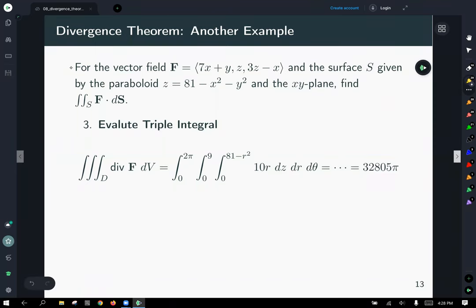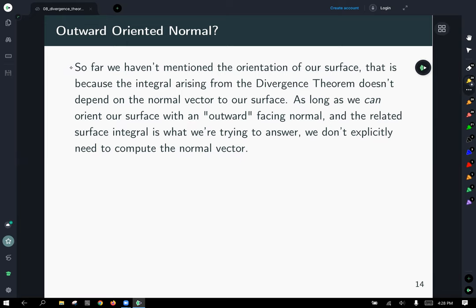I lied. That doesn't actually conclude it. There's one more comment I have to make. So why haven't we mentioned the orientation of the surface in this case? Well again, I've said it a couple times that we don't actually have to set up the surface integral, we can just apply the divergence theorem and do the oftentimes easier triple integral, and as such, orientation of the surface doesn't come up. So as long as it's possible to orient our surface with an outward-facing normal, in other words, as long as it's possible to do a surface integral of this particular field, then we don't need to explicitly compute the normal vector or worry about that orientation when we're applying the divergence theorem. And now that brings our discussion to a close.